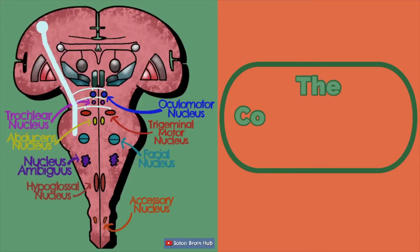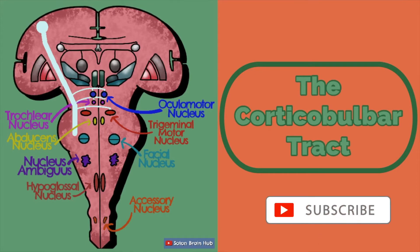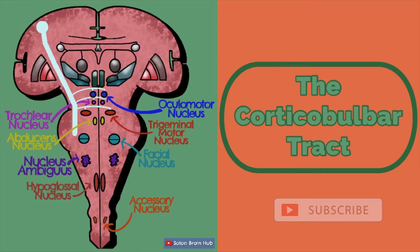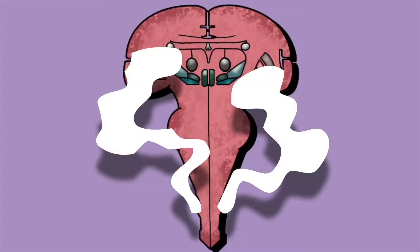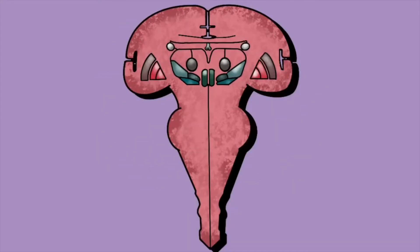Hello and welcome to this video covering the corticobulbar tract. This is the main motor pathway that goes to muscles of the head and face, and it comprises an upper motor neuron and a lower motor neuron.